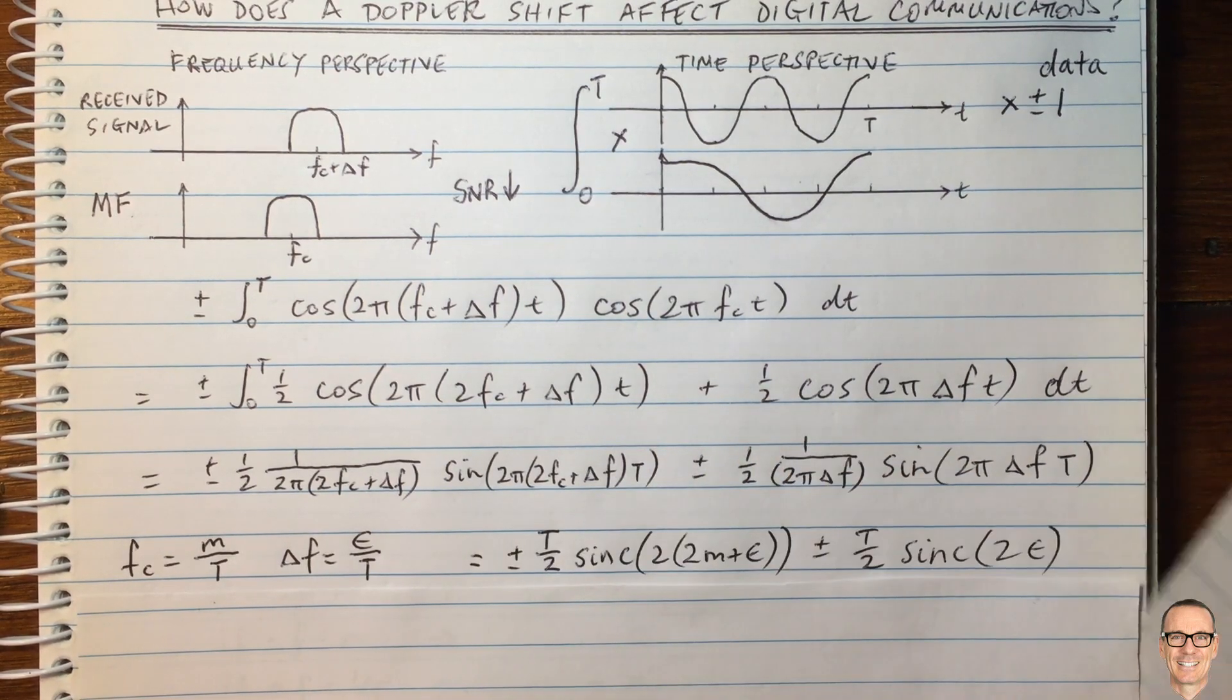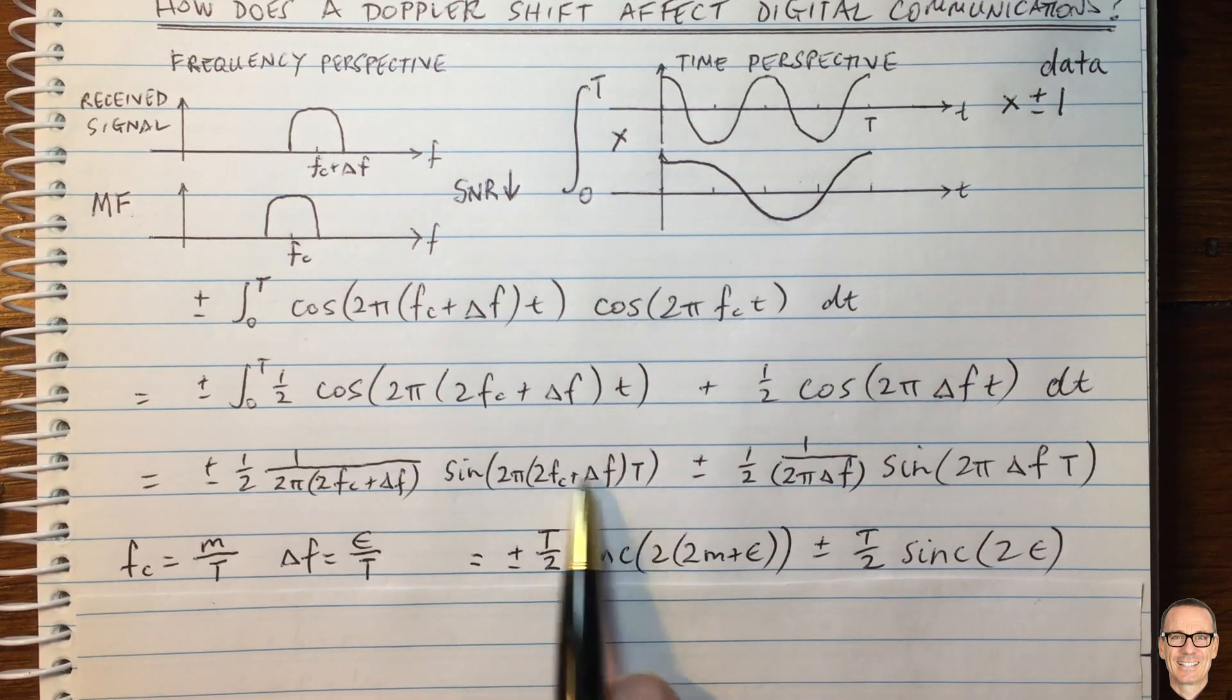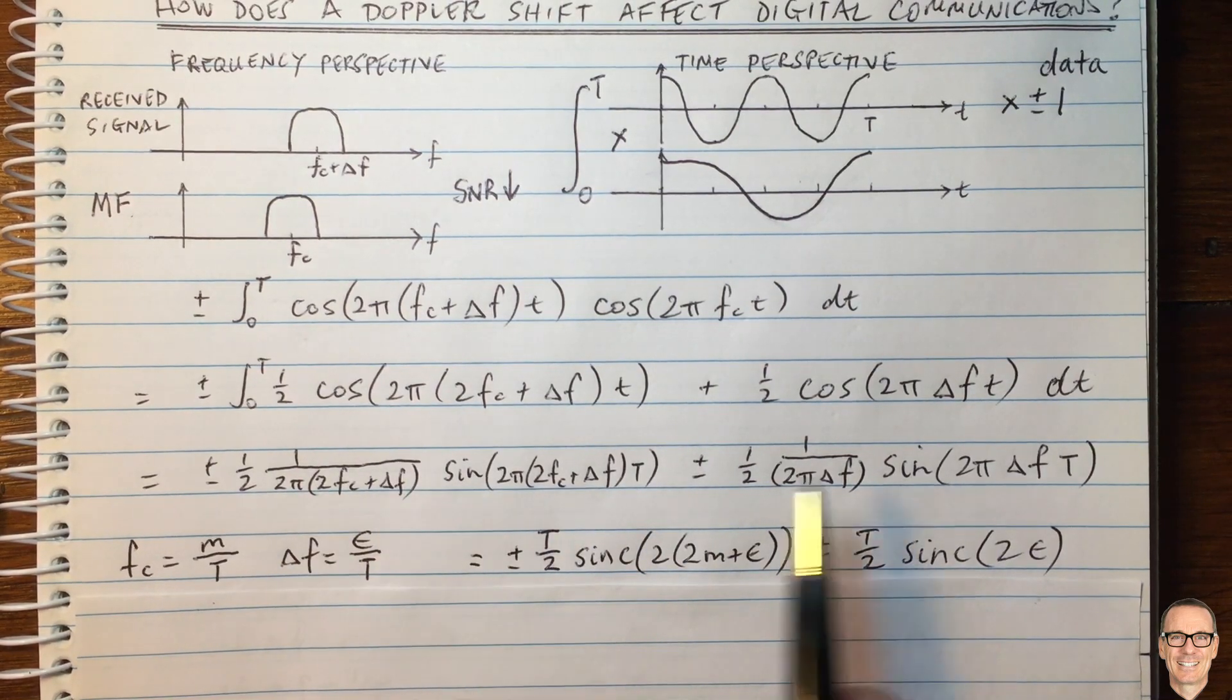And when we do this, we can see that we get two sinc functions. We've got the sine pi x divided by pi x in both cases.